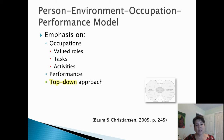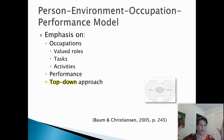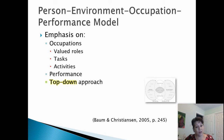For occupations, the model focuses on what are some valued roles and what are the tasks and activities that go into those valued roles. The authors state this is a top-down model, meaning we start with the occupations and work down to the components. So we start with the big picture: where do we want things to end up, and what does the overall plan look like? Then we break it down into what are those component parts of performance skills and client factors that we need in order to complete those occupations.